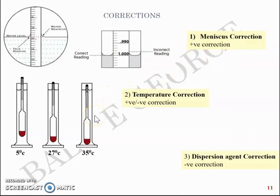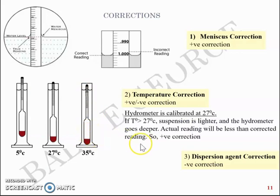The second correction is a temperature correction. A hydrometer is calibrated at 27 degrees standard temperature. If the temperature at your lab is greater than 27 degrees, the suspension will be lighter and the hydrometer will go deeper. The actual reading will be less than the corrected reading and hence you have a positive correction. Vice versa when you have the temperature less than 27 degrees celsius, the suspension will be stiffer and the hydrometer will not go deep. The actual reading will be greater than the corrected reading and you will have a negative correction.